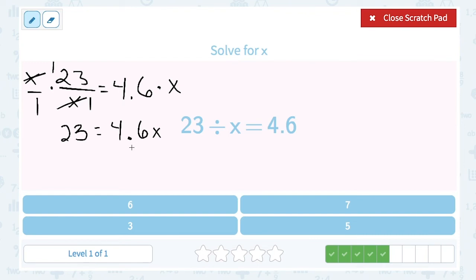Now I need to get the x alone. To undo 4.6 times x, I divide by 4.6. I do the same thing to both sides. 4.6 goes into 4.6 once, leaving x equals 23 divided by 4.6.